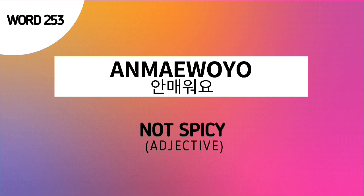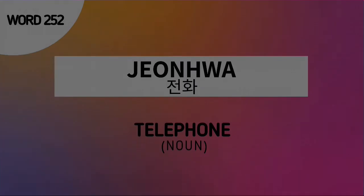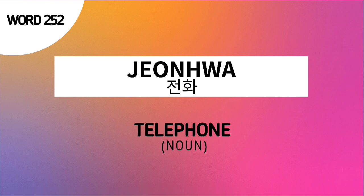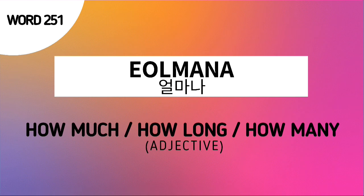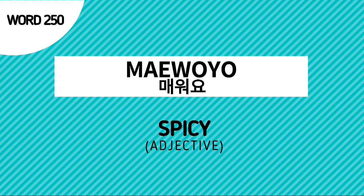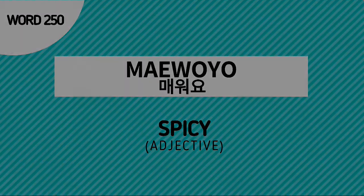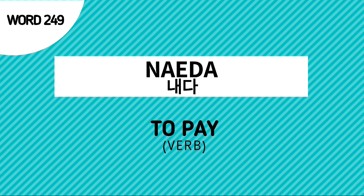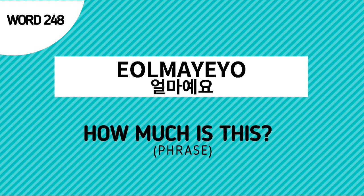Word number 253 is Anmewoyo, which means 'not spicy.' Word number 252 is Chonwa, which means 'telephone.' Word number 251 is Olmana, which is used to indicate the degree or intensity of a certain description. Word number 250 is Mewoyo, which means 'spicy.' Word number 249 is Neda, a verb which means 'to pay.' Word number 248 is Olmaeo, used to ask 'How much is this?'